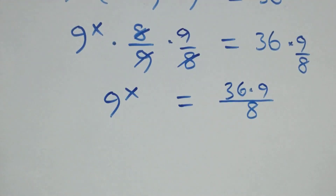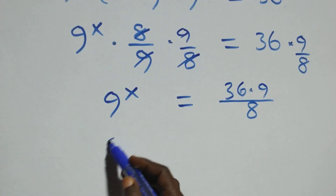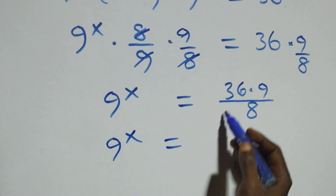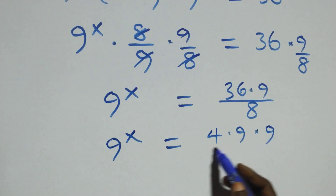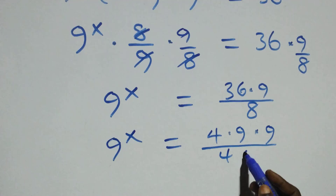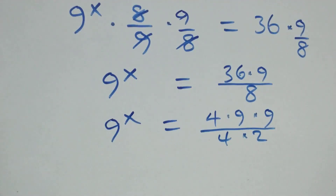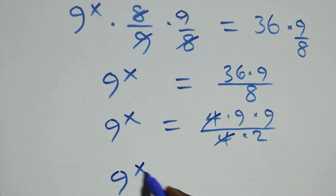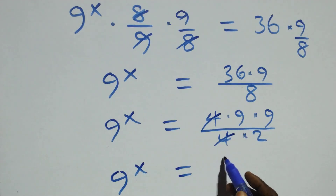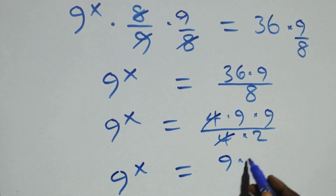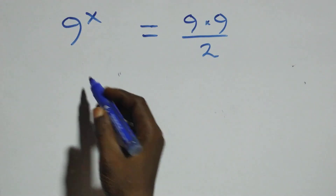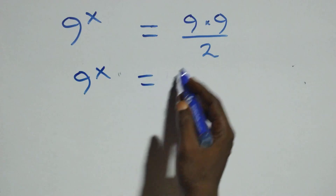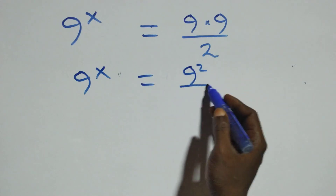In the next step, we can write 36 as 4 times 9. So 9 raised to power x equals 4 times 9 times 9 over 8. Since 8 can be written as 4 times 2, the 4's cancel each other. This becomes 9 raised to power x equals 9 times 9 over 2, which is 9 squared over 2.